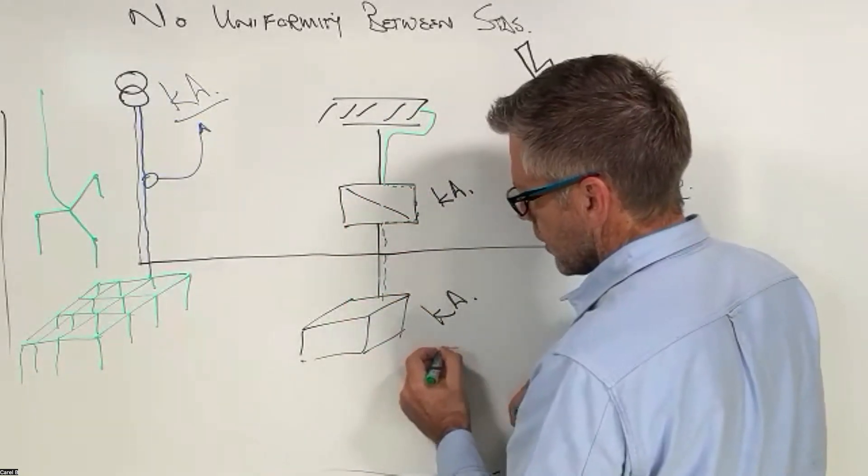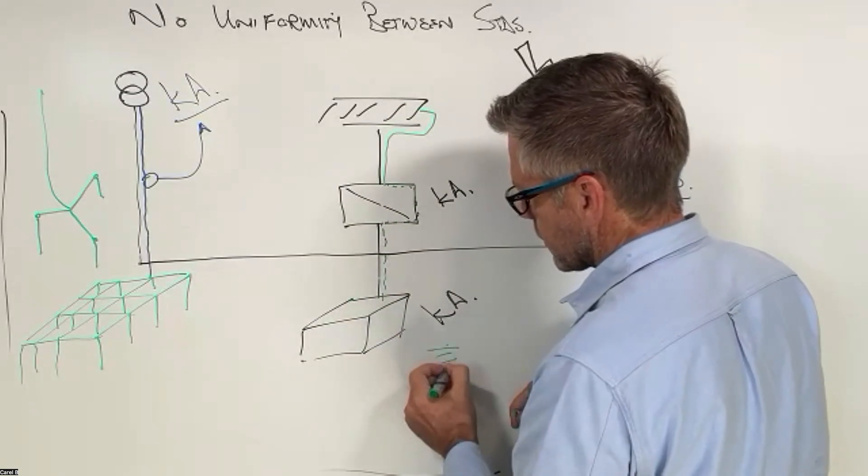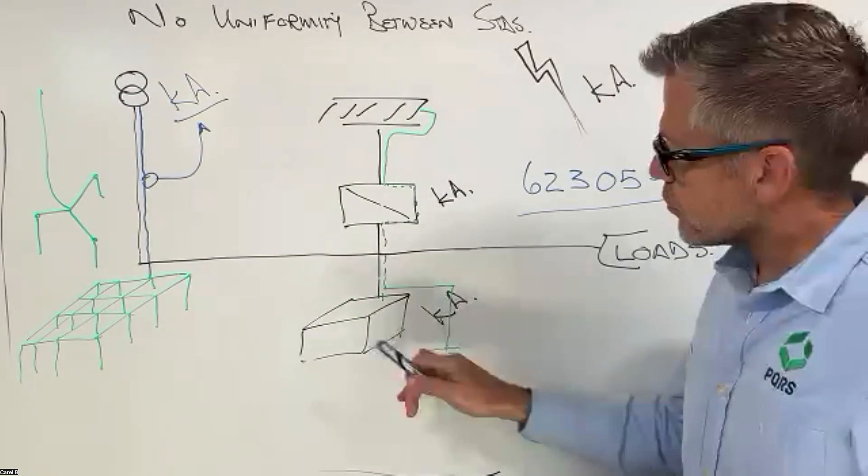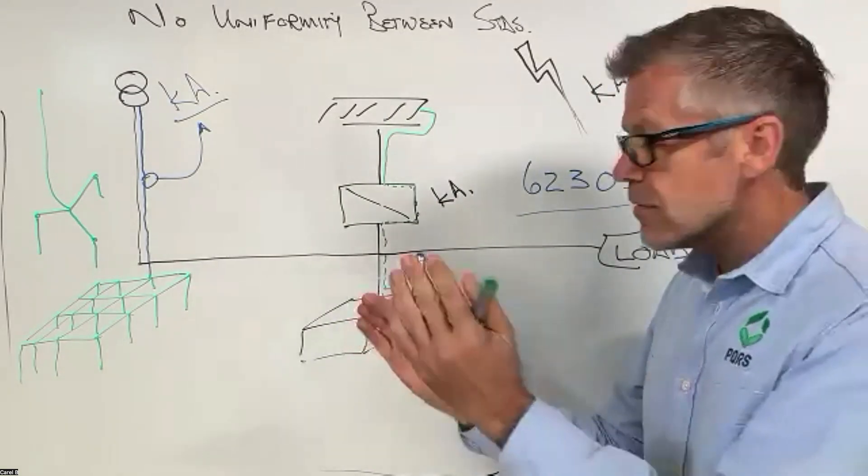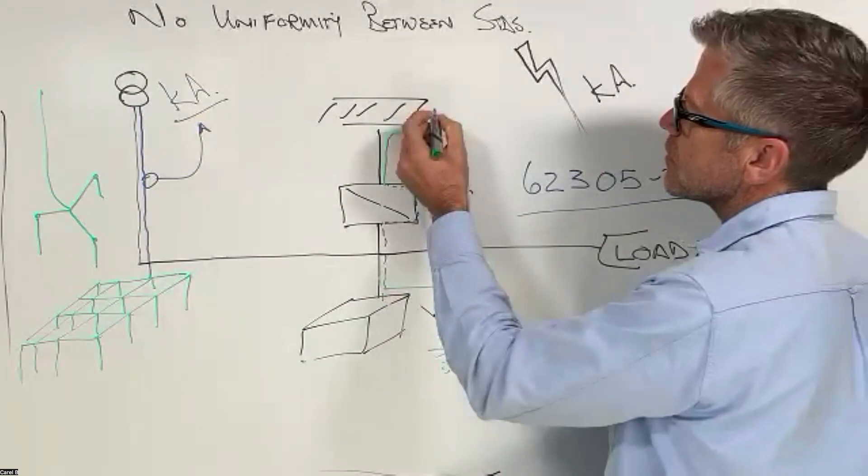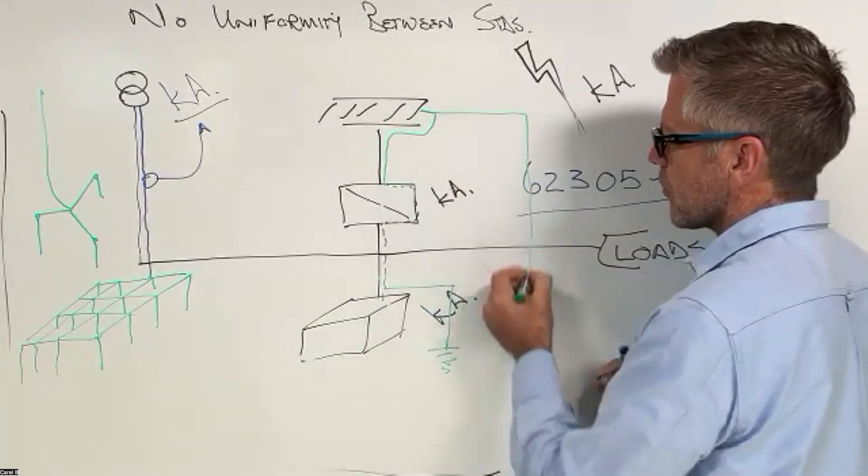And then you have some spikes over there. Or in other words, are you expecting the fault current to come from the battery and the inverter, or are you expecting the fault current to come from the panels?